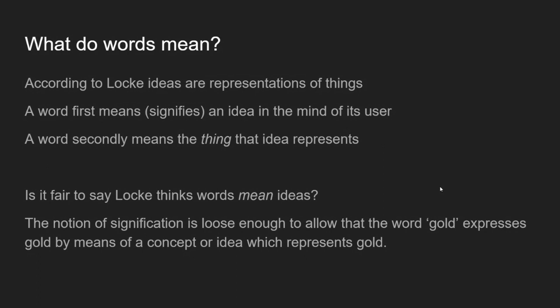What do words mean? According to Locke, ideas are representations of things. Those familiar with Locke's epistemology will know he's an indirect realist — there are primary and secondary qualities, and there is an external world. My ideas of things are representations of those things in the actual world. When I use a word I'm using it to signify that idea. On first sight, that's what a word means: it signifies the idea, and the idea signifies a thing in the world — so it's by that route that the word itself signifies the thing in the world.